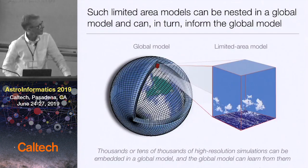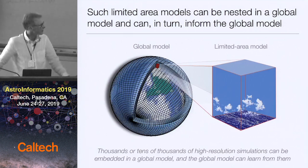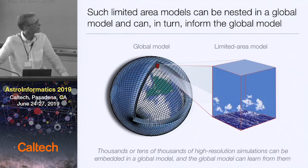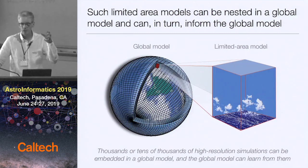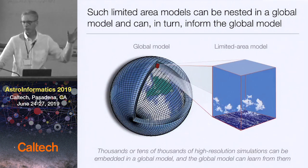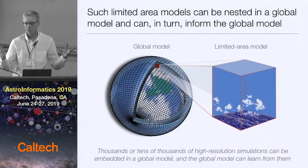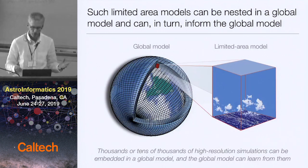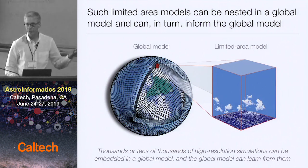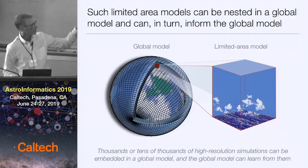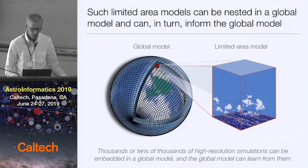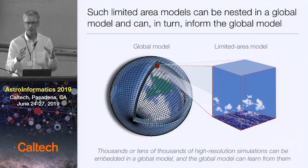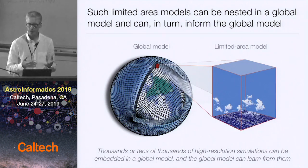What you can do is nest limited-area models, like what I showed you, in selected grid columns or smaller areas of a global model. You can do it in thousands of columns. We're working on a project right now with Google where we have 20,000 of these simulations embedded in a global model. This massive computation yields large amounts of data that we can use to inform what the large-scale, coarse-grained model does — for example, about clouds. You need a way of interpolating the data generated in limited areas to spread it to the rest of the globe.